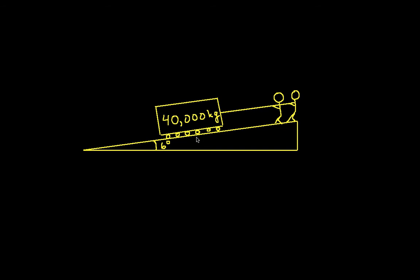So our goal is to use statics to determine the tension that these workers need to keep in this cable in order to keep our 40,000 kilogram block from sliding down this ramp. We'll assume that the rollers underneath the block are put there in such a way that the whole thing is frictionless. In other words, there's no force opposing the block rolling down the ramp except for the workers.